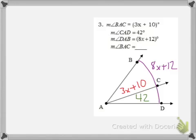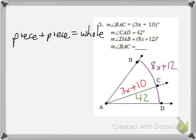Can we set up an equation that would relate these angles to each other? Of course we can. Remember our general equation is that we have piece plus a piece equals the whole thing. So, the first piece is the 3x + 10. Then, we have the second piece, which is 42. And, the whole thing is 8x + 12. That's an equation that we can solve. Let's do that.